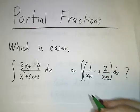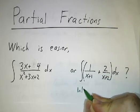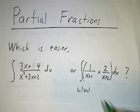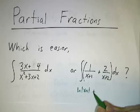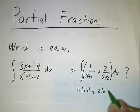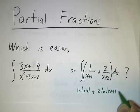After all, the integral of 1 over x plus 1 is easy, that's the natural log of x plus 1. And this integral is also easy, that's twice the natural log of x plus 2. And you have your arbitrary constant and you're done.